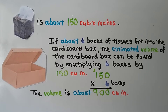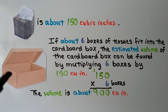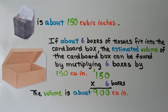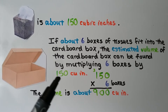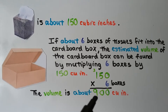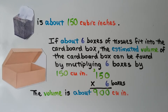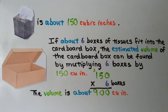So if we know one box of tissues is about 150 cubic inches, and about six boxes of tissue fit into this cardboard box, the estimated volume of the cardboard box can be found by multiplying six times 150 cubic inches. We get 900. That means the volume of this box is about 900 cubic inches. We say 'about' because we didn't actually measure it precisely.